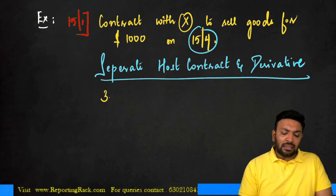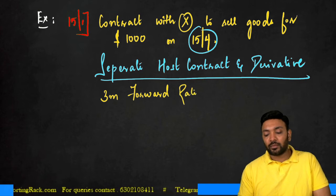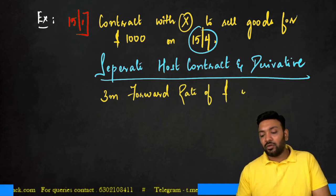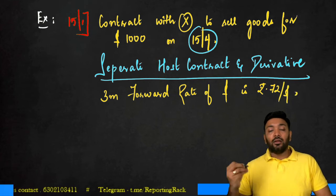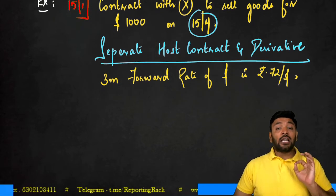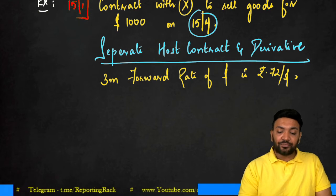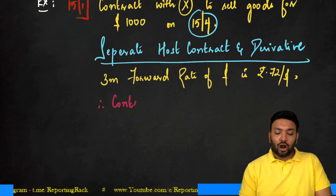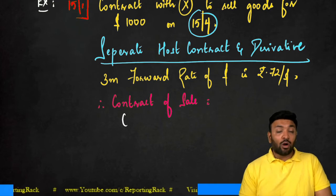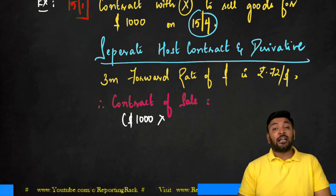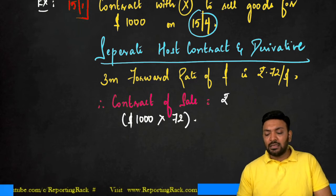On the date of transaction, the three-month forward rate is Rs 72 per dollar. Therefore the contract for sale should be measured at $1,000 × Rs 72 = Rs 72,000. This is how the host contract is separated — measured at the forward rate applicable at the date of transaction.